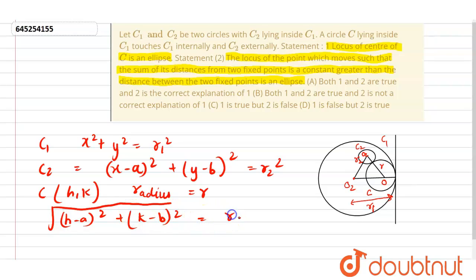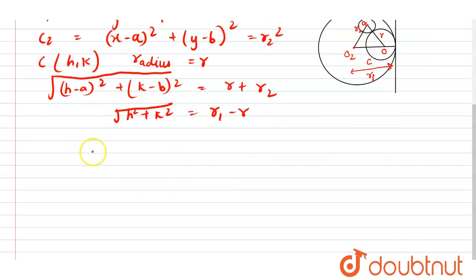This equals r plus r2, and we know that it becomes h square plus k square is equals to r1 minus r.